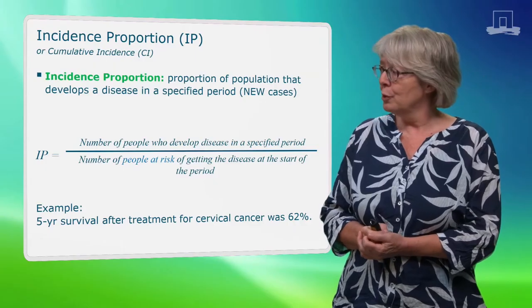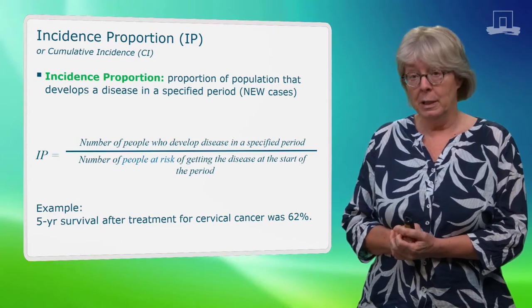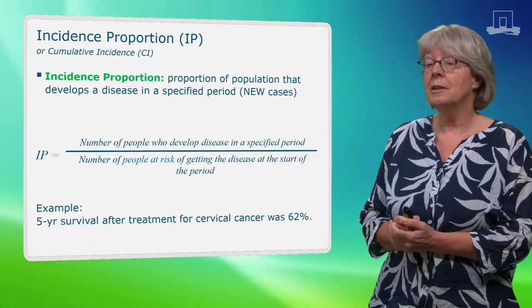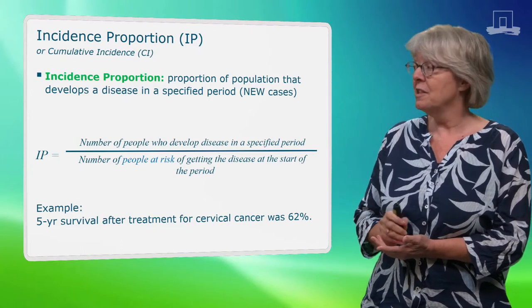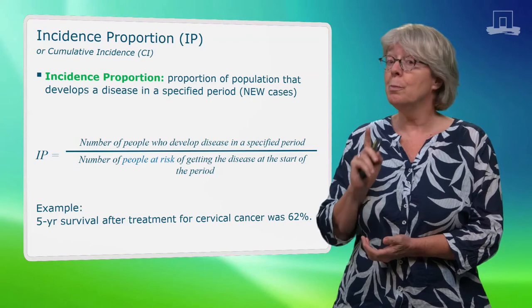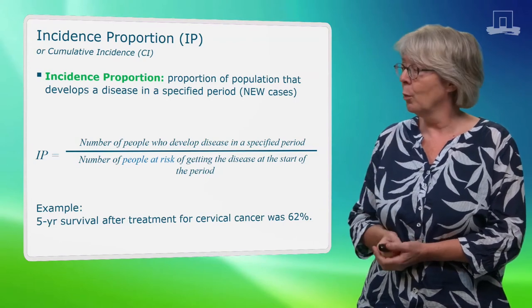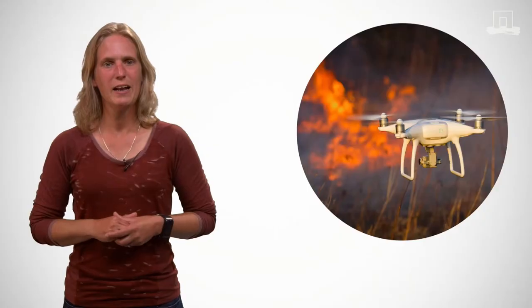The incidence proportion is the proportion of the population that develops a disease in a specific period, but it should be new cases, not existing ones. Let me refresh your memory a bit and have a look.